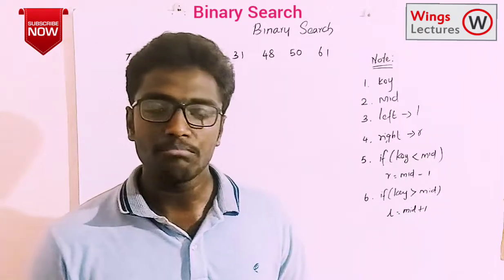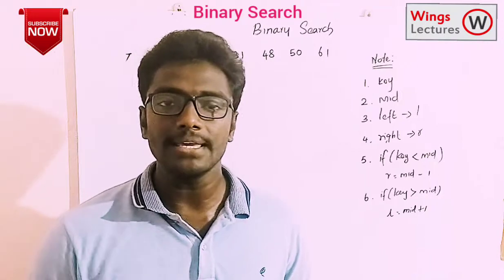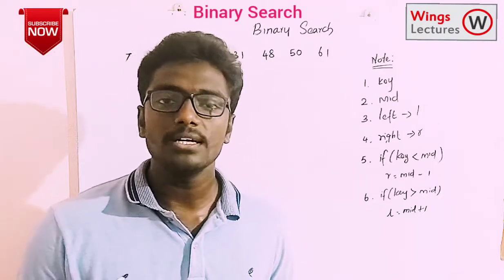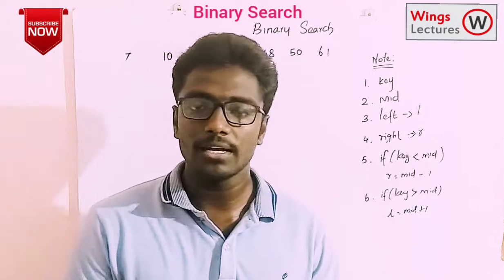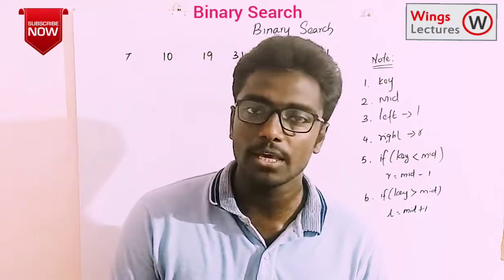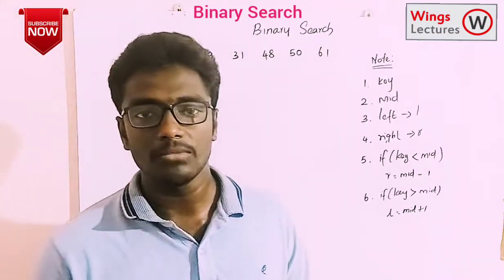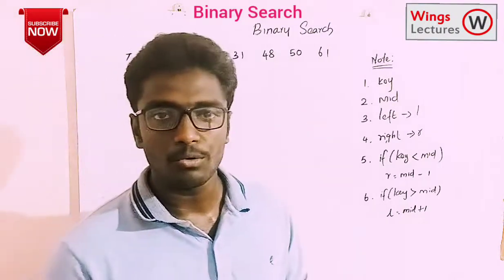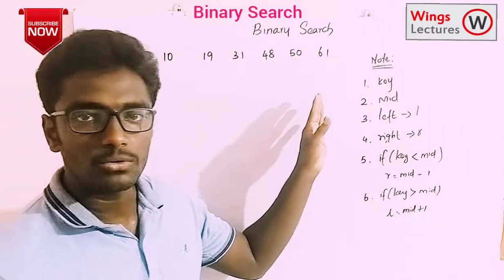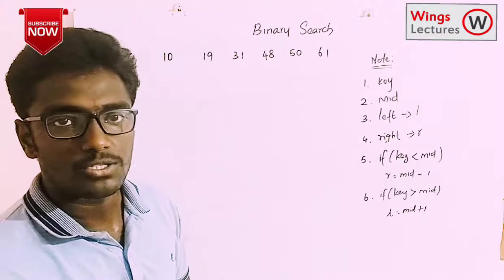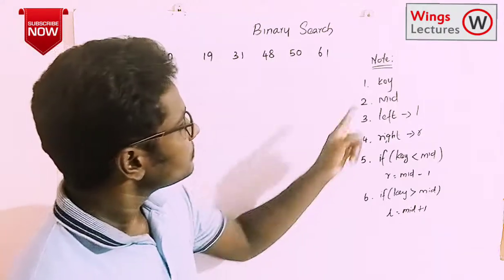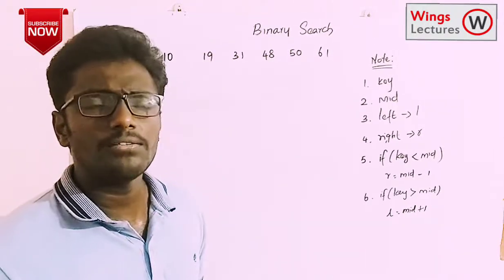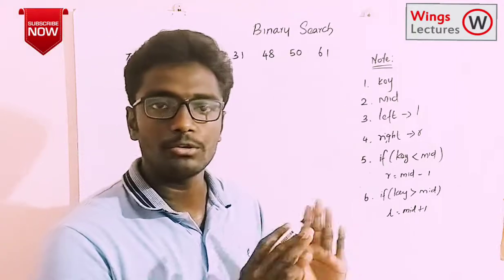In binary search, we apply the divide and conquer method to filter the data from the given elements. We have some key terms to start with. The first one is 'key', which is nothing but the element which is going to be searched.